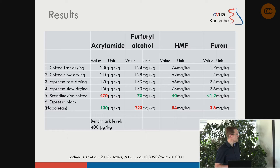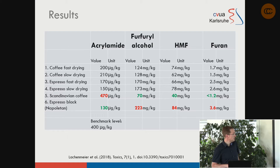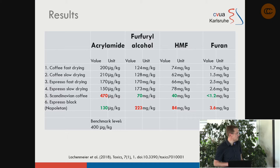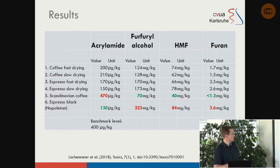The EU benchmark level for acrylamide in coffee sold in Europe is 400 micrograms per kilogram. Of all the profiles, only the Scandinavian very light roast exceeded this benchmark level — by 70 micrograms, reaching 470 micrograms per kilogram. The lowest value was the very dark Neapolitan espresso at only 130 micrograms per kilogram, far below the benchmark. Normal coffee and standard espresso roasts are also well below the benchmark level.